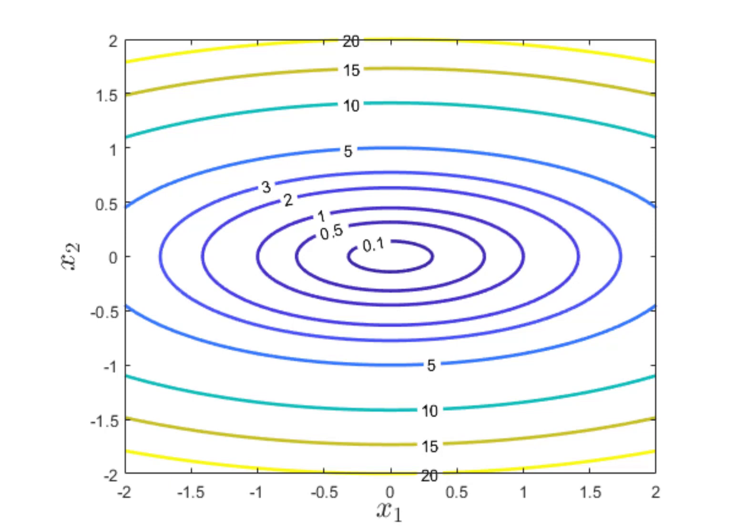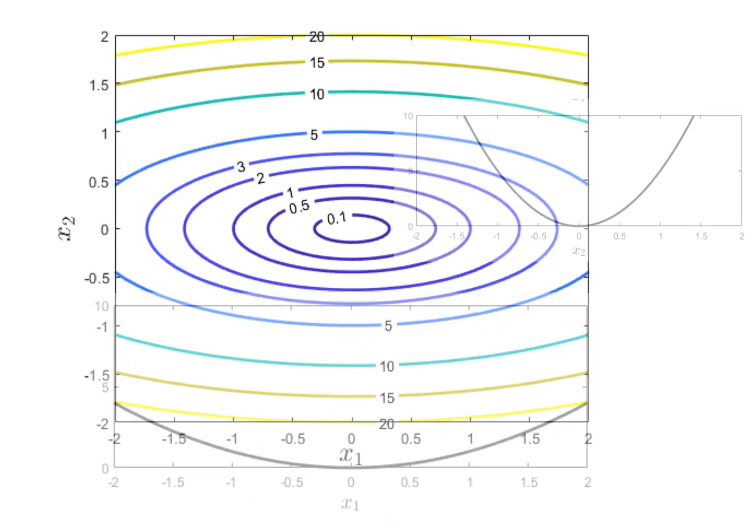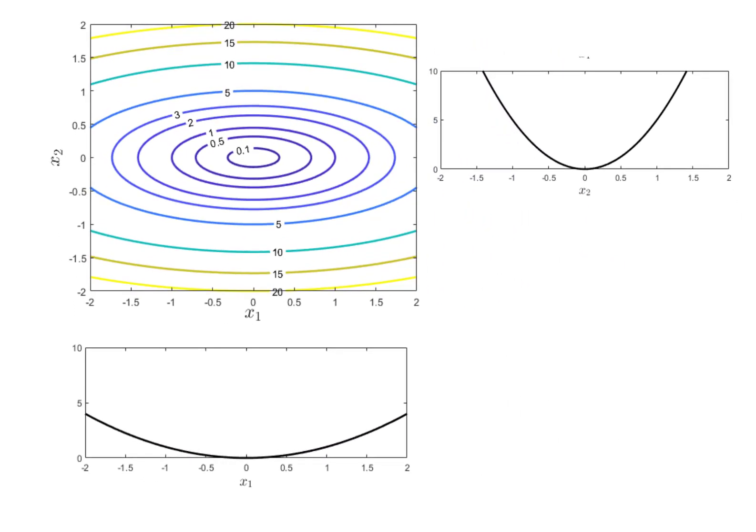So in this case there are two eigenvalues. So corresponding to the two eigenvalues there are two eigenvectors which is basically along each of the axis. So we can view the function from these two directions. As you can see the function is okay when we look along one of the directions but is quite flat when we look at from the other direction.